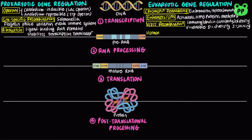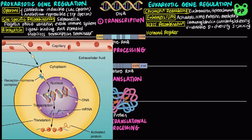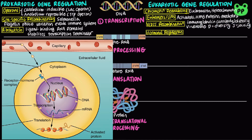Finally, eukaryotic transcription is subject to hormonal regulation. Lipid-soluble hormones, including steroid hormones and thyroid hormones, diffuse through the plasma membrane and interact with intracellular nuclear receptors. The hormone-receptor complex binds to highly specific DNA sequences called hormone response elements, abbreviated as HRE, that alter gene expression.